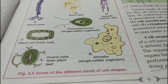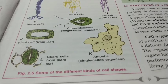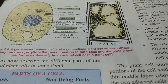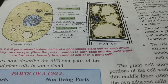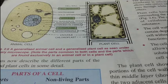Here is a picture of an animal cell and a plant cell as seen under an ordinary microscope. This shows the general structure of both cell types. The animal cell is almost round or oval in shape, whereas the plant cell is rectangular.